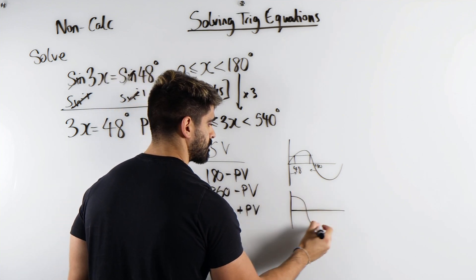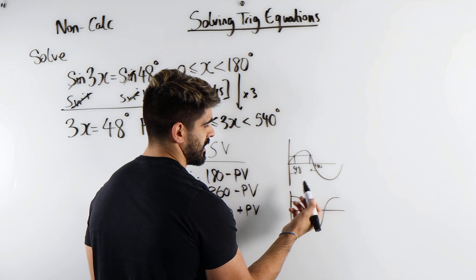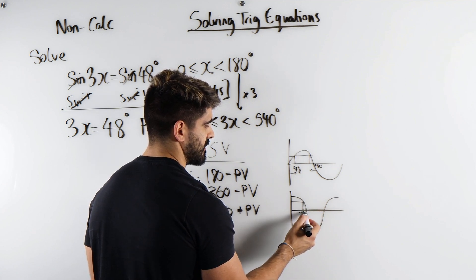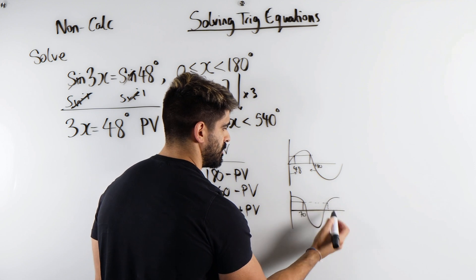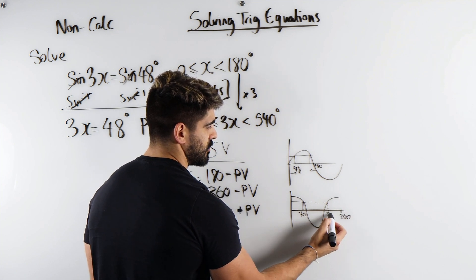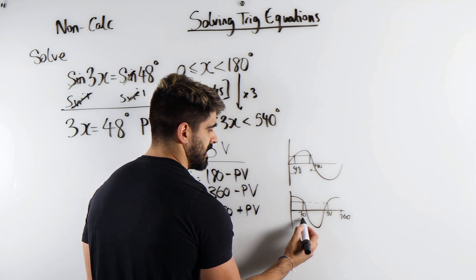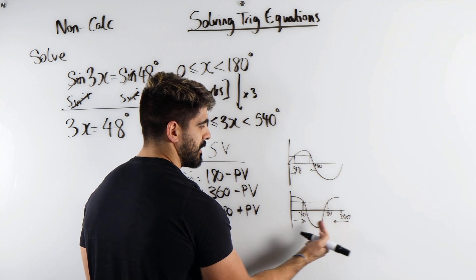For cosine, which looks like this, say you got 48. Now that doesn't look like 48, just say that gave you 70. You can see that the other solution would be over here. This is 360. So to get this value, which is the secondary value, this is in by 70 using symmetry, so 360 minus the primary value.